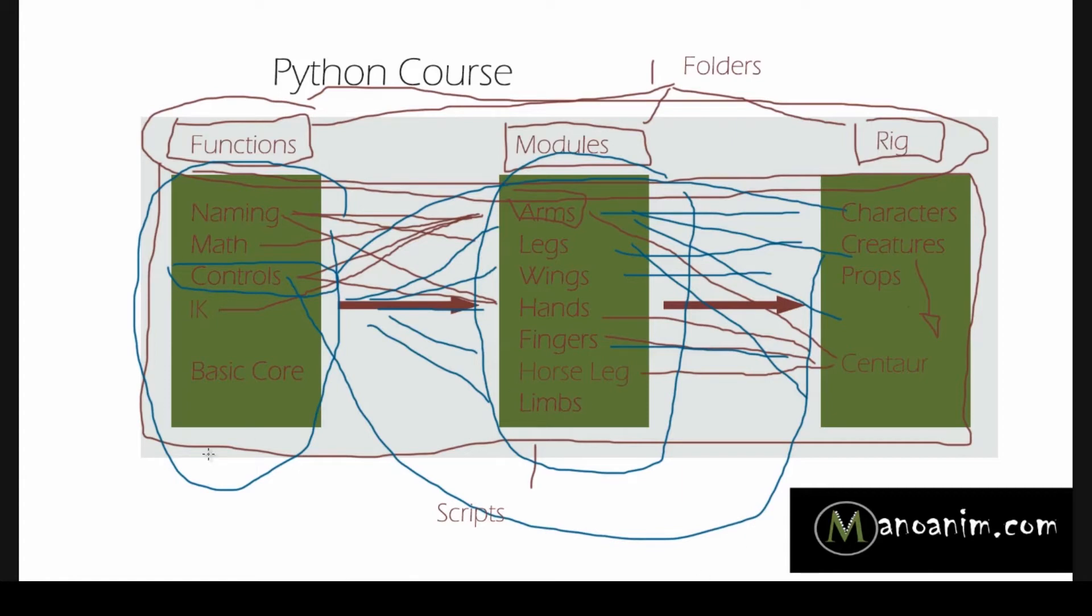I can import that into maybe my character script over here, or I can import it into any of the other things. So overall, all these things in the green boxes are the scripts, and the green boxes themselves are folders. But in the beginning, we're going to keep everything into this arm. And then after that, I'm going to start like dividing stuff out.